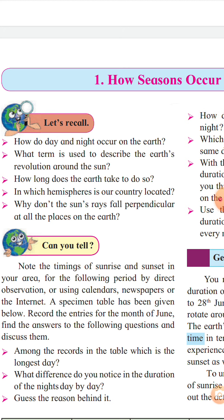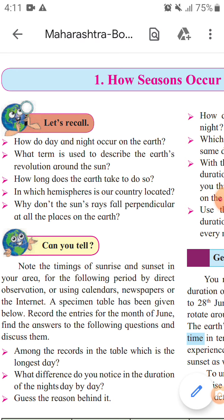The second question is: What term is used to describe the earth's revolution around the sun? The earth spins around its axis just as a top spins around its spindle. This spinning movement is called earth's rotation.